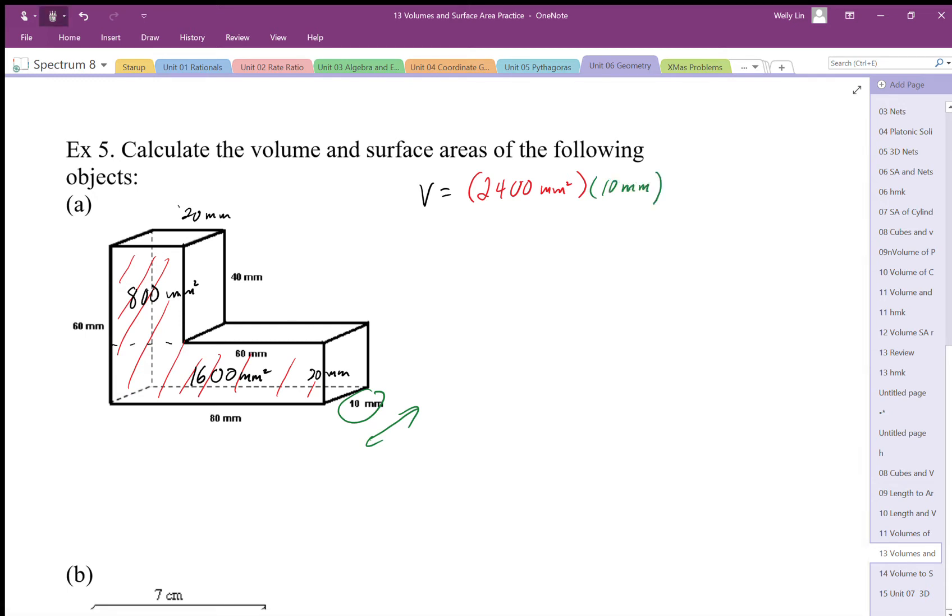So the volume of this object works out to be 24,000 millimeter cubed. Okay, so that's my total volume of that object.